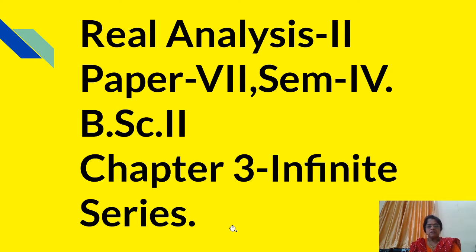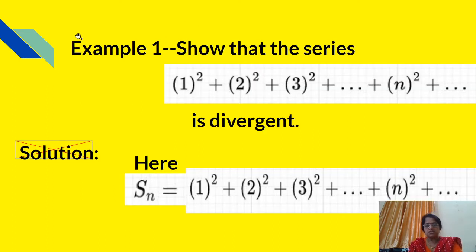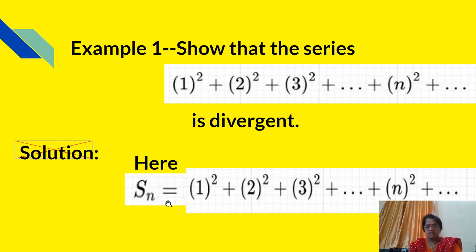Today we will see some sums depending upon infinite series from real analysis. The first sum: show that the series 1² + 2² + 3² + ... + n² + ... is divergent. Here Sn is equal to 1² + 2² + 3² + ... + n² + ...